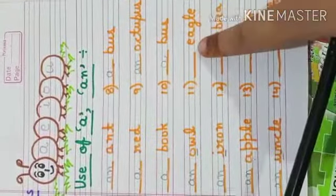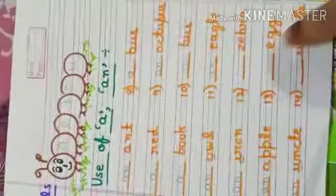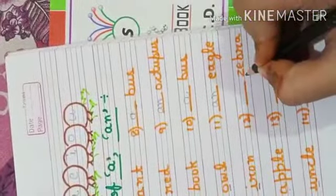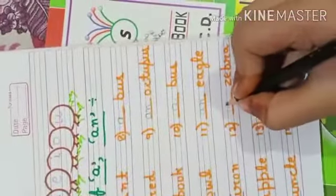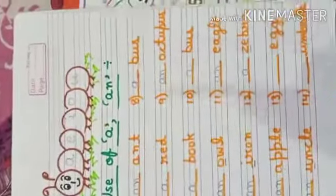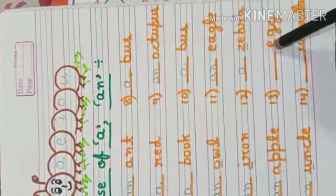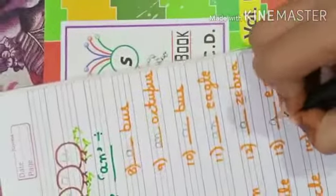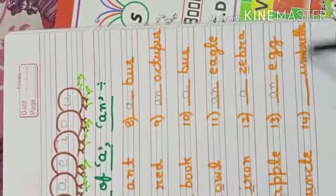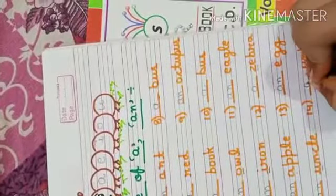Next, eagle. E-A-G-L-E. E is a vowel, so we use AN. Next, zebra. Z-E-B-R-A. Z is a consonant, so we use A. Next, egg. E-G-G. E is a vowel, so we use AN. Next, umbrella. U-M-B-R-E-L-L-A. U is a vowel, so we use AN.